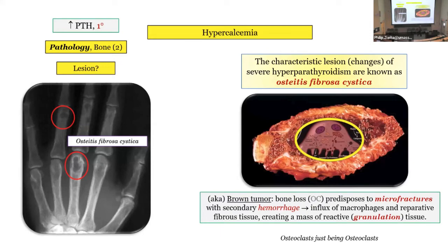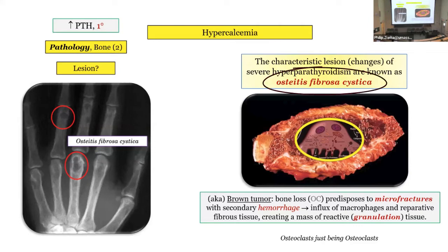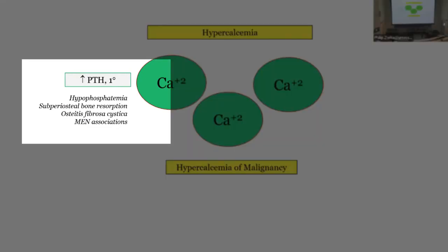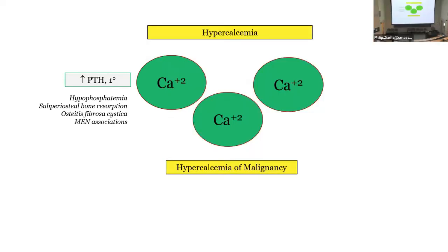The other bone pathology is osteitis fibrosa cystica, also called brown tumors. These are lesions caused by bone loss from osteoclast stimulation, predisposing to micro-fractures with secondary hemorrhage. You get micro-fractures, bleeding, and then granulation tissue. The osteoclasts eat bone, cause micro-fractures, and you bleed in there — that's osteitis fibrosa cystica. You don't need to know the mechanism for the exam, but it helps you remember it.